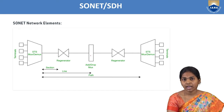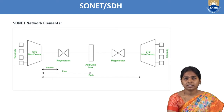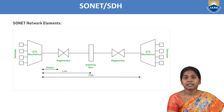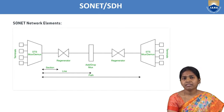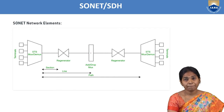The add drop multiplexer adds data if required. If data is not required, it can redirect it without demultiplexing. So whatever desired data is available, it multiplexes, and at the receiver we can demultiplex the data. If it is not required, it is redirected without demultiplexing — that is the use of the add drop multiplexer.